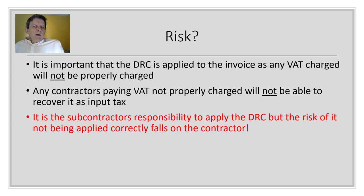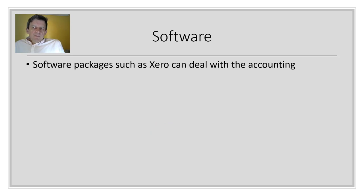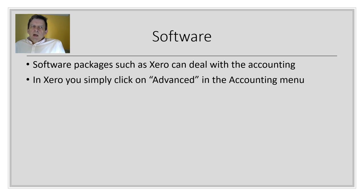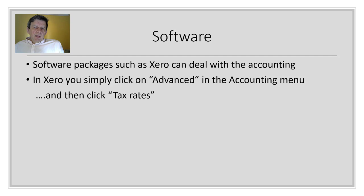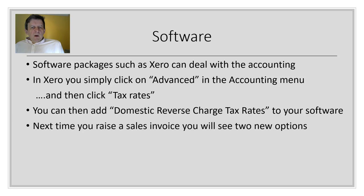Thankfully, all software providers are getting up to speed with the domestic reverse charge, and software deals with pretty much all the compliance. Packages such as Xero, QuickBooks, and Sage handle all the accounting. In Xero, you need to enable the new domestic reverse charge tax rates: go to the Accounting menu, click Advanced, then Tax Rates. You'll see a prompt asking whether you want the domestic reverse charge tax rates to apply in your software — just click it. From that point, the software recognises you could be raising an invoice subject to the DRC.